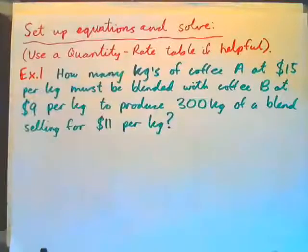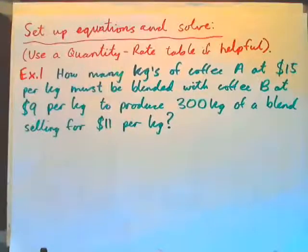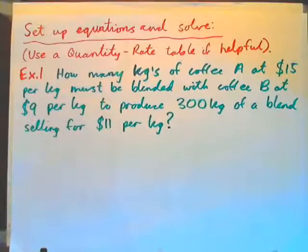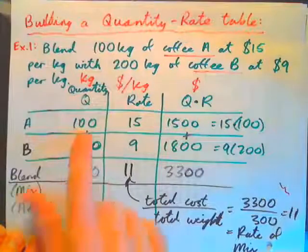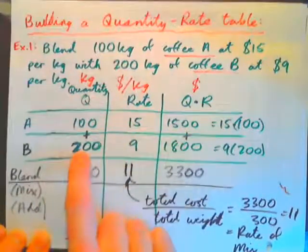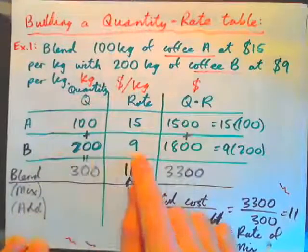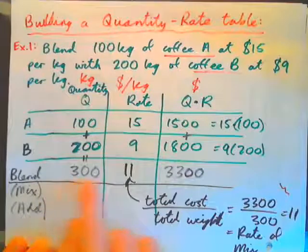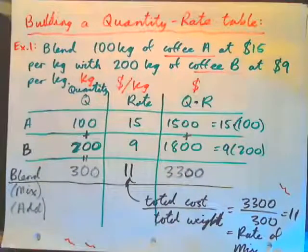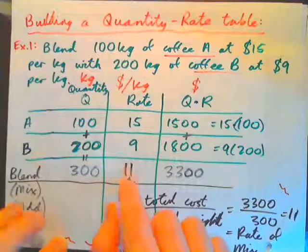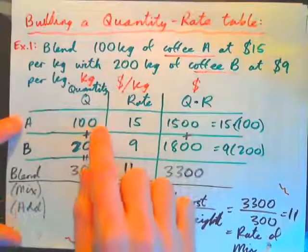Looking at example one: how many kilograms of coffee at $15 per kilogram must be blended with coffee at $9 per kilogram to produce 300 kilograms of a blend selling for $11 per kilogram? If we blend 100 kilograms at $15 per kilogram with 200 kilograms at $9 per kilogram, we get 300 kilograms total at $11 per kilogram average cost. So the answer is 100 kilograms of coffee A and 200 kilograms of coffee B.